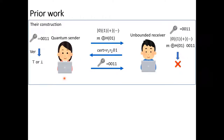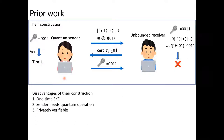Their construction has disadvantages as follows. First, their construction is limited to the setting of one-time secret key encryption, which means that one needs the same secret key to run the encoding algorithm and to run the decoding algorithm, and the key cannot be reused. Second, in their construction, the sender needs quantum operations. Third, in their construction, deletion is privately verifiable, which means that the sender needs the verification key kept secret. In their construction, if the verification key is revealed, the malicious receiver can obtain both the correct certificate and the message.